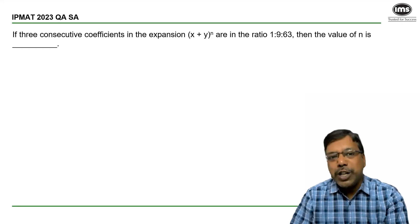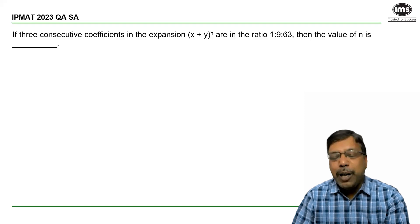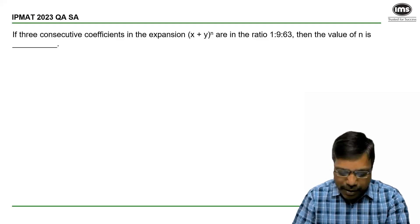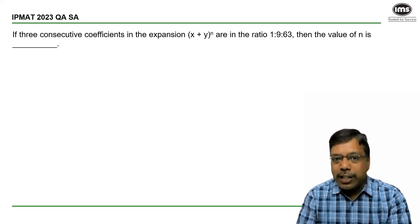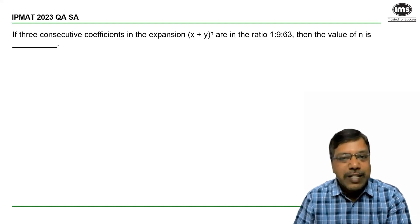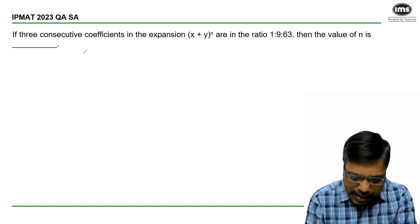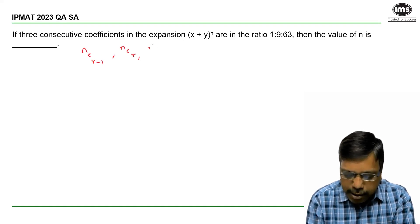Let's see how to answer this question on binomial theorem which has appeared in IPMAT 2023 short answer section. Three consecutive coefficients in the expansion are in the ratio 1:9:63. We need to find the value of n. Let me consider the coefficients are nCr-1, nCr, and nCr+1.